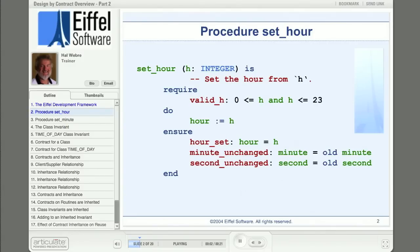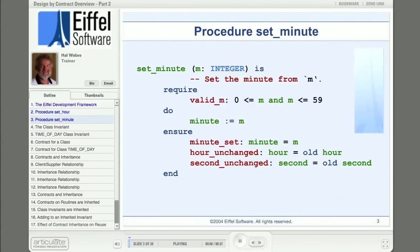Remember, in part one, we constructed a routine set_hour for class TIME_OF_DAY with a specification and one possible implementation. Well, the TIME_OF_DAY class could have other routines, too, like set_minute and set_second. Each of those routines would need to be specified as well. So, here's set_minute. Looks a lot like set_hour. But notice that the precondition specifies the proper range for minutes, and the postcondition ensures that, after execution, the minute will have the same value as the argument m, and that the hour and second remain unchanged.